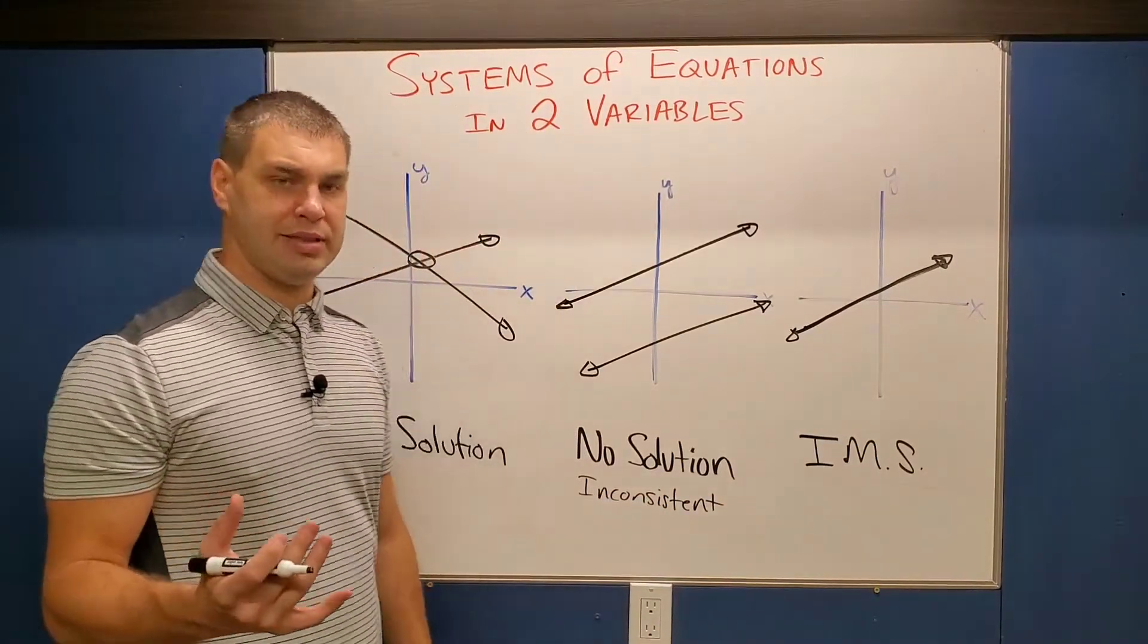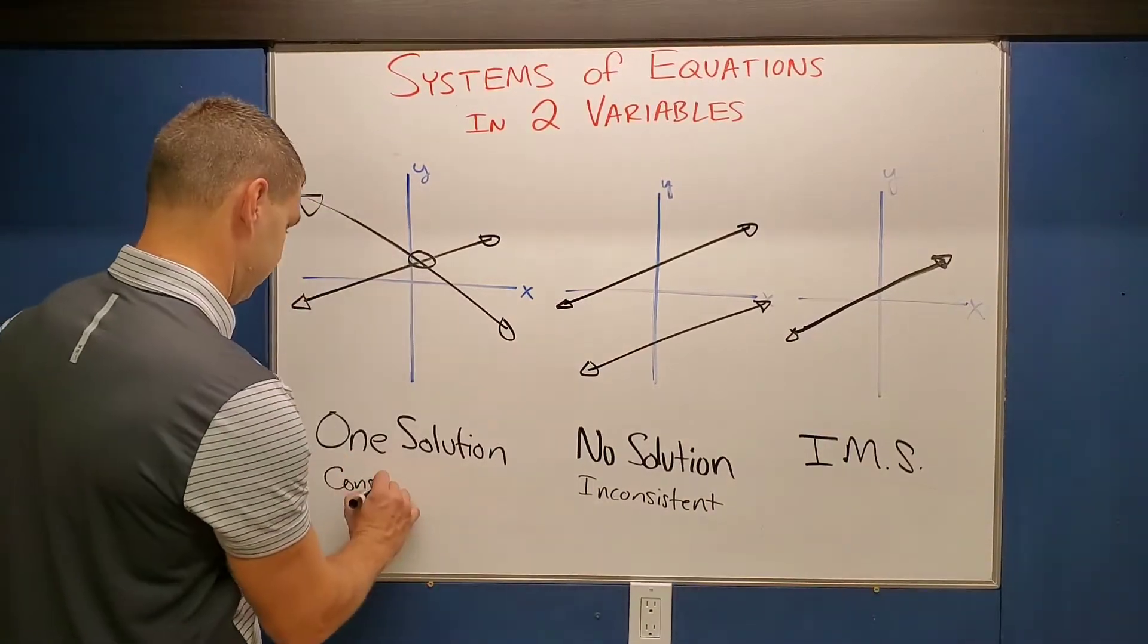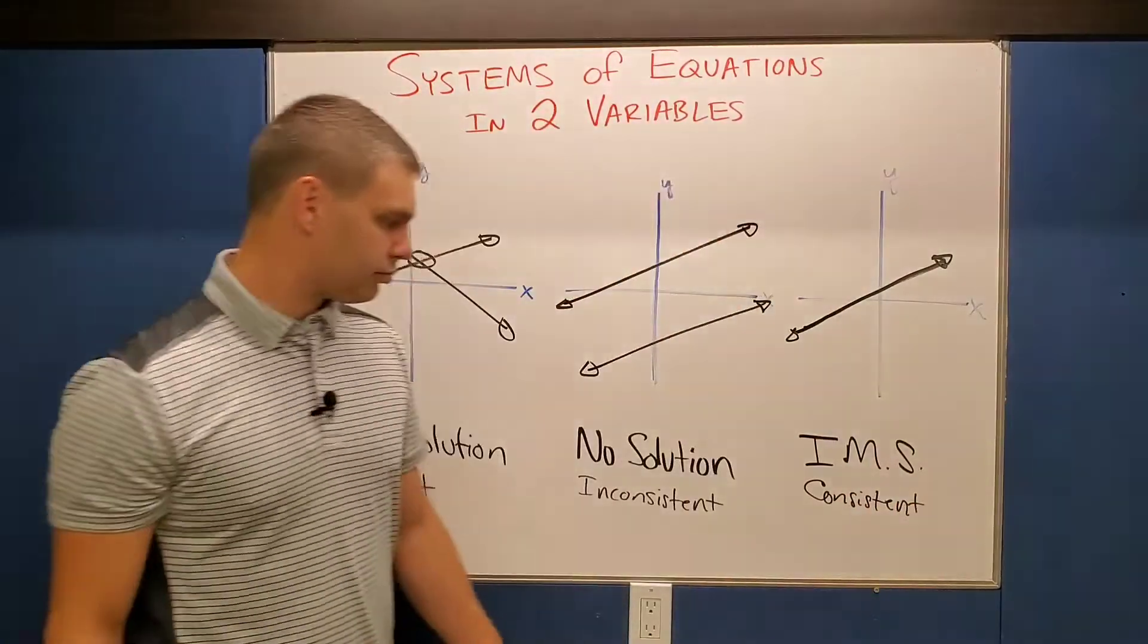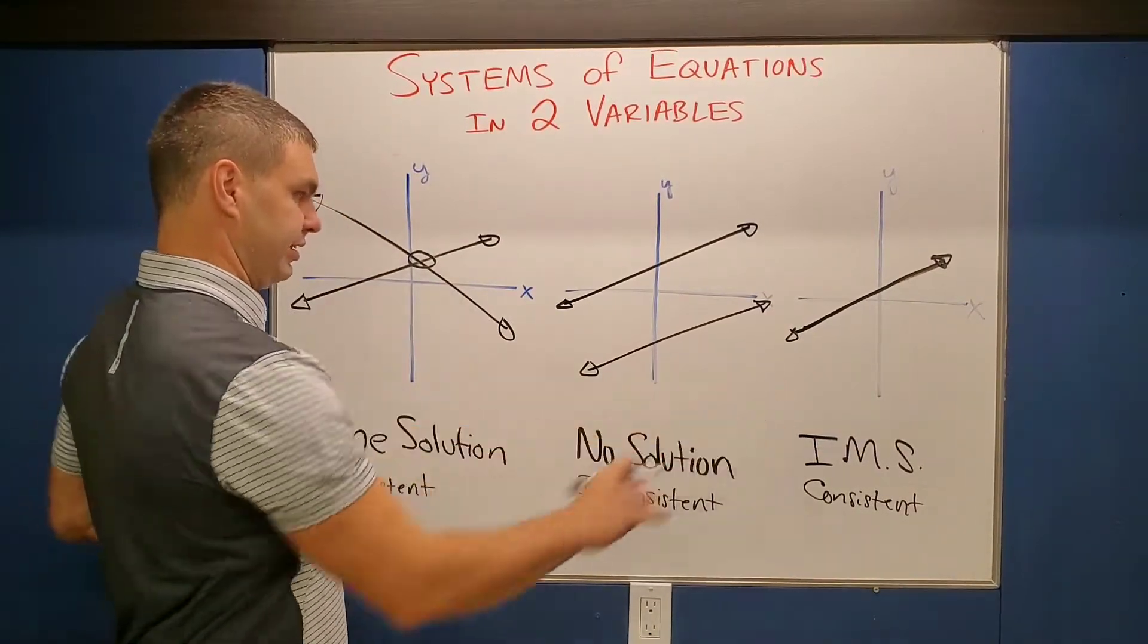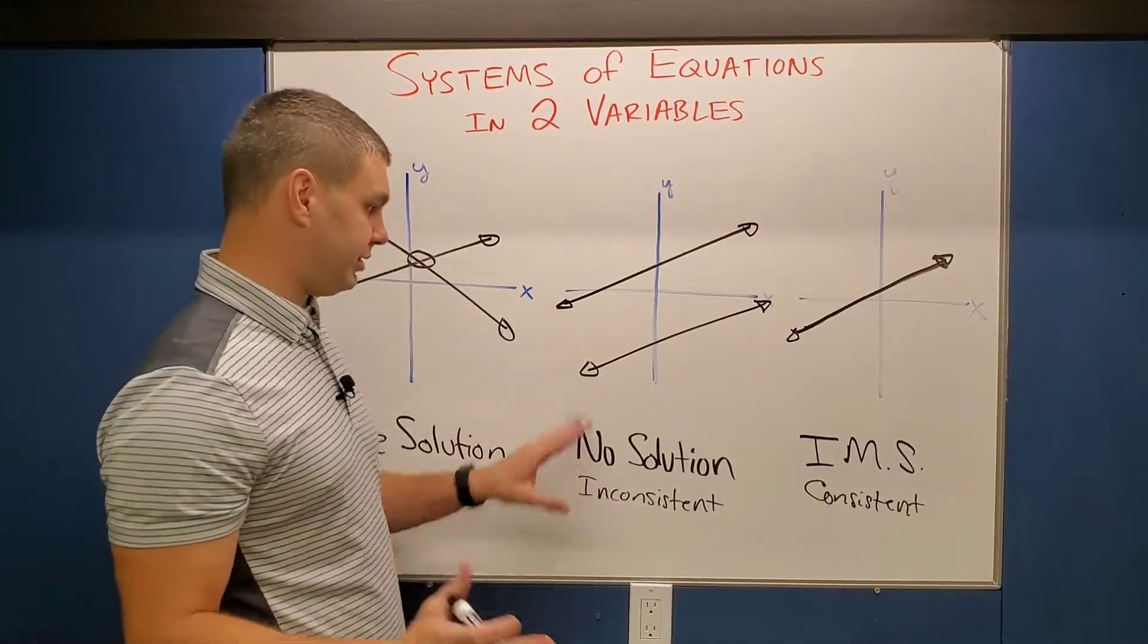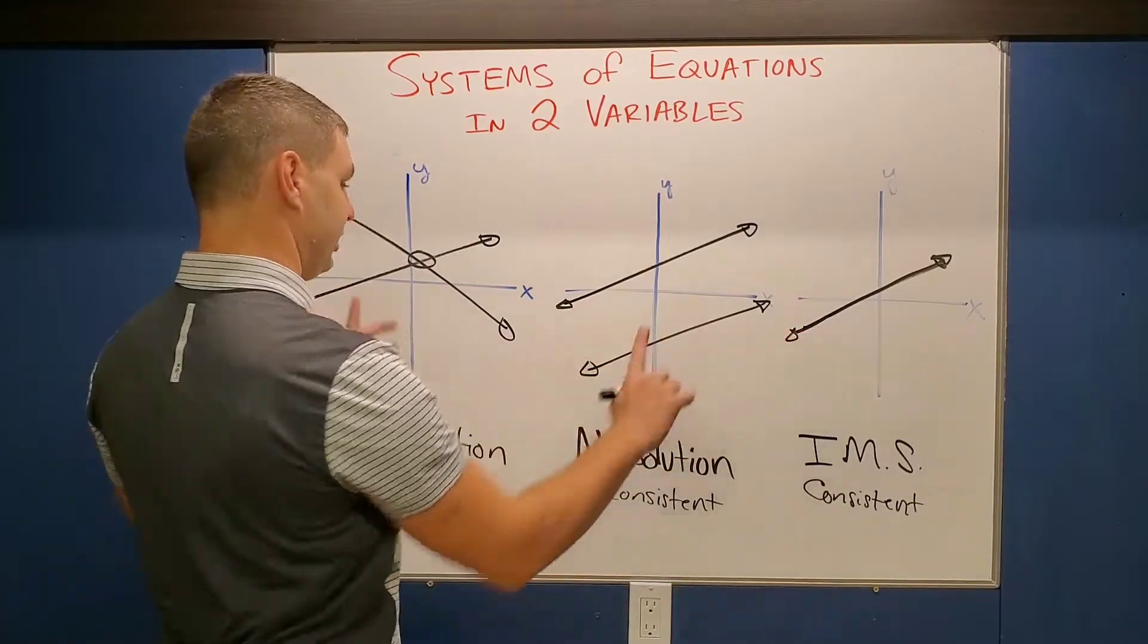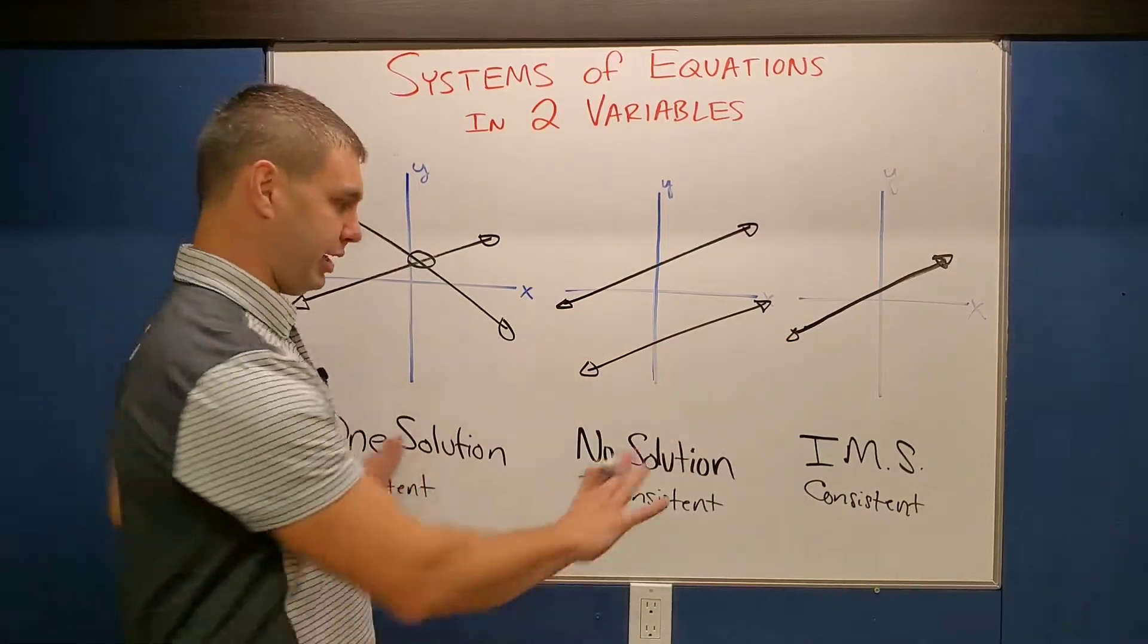That means that the other two are gonna be consistent. The reason for that is this one doesn't cross, these two both cross at least once. That's why they're consistent.